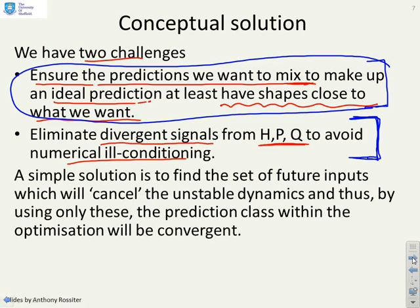A simple historical solution is to find a set of future inputs which will cancel the unstable dynamics. This deals with eliminating divergent signals, so that the prediction class we are using becomes convergent.